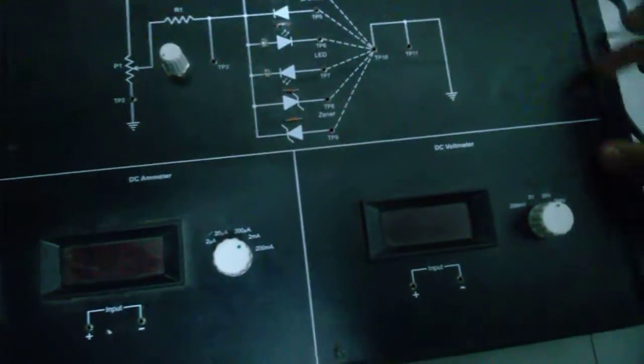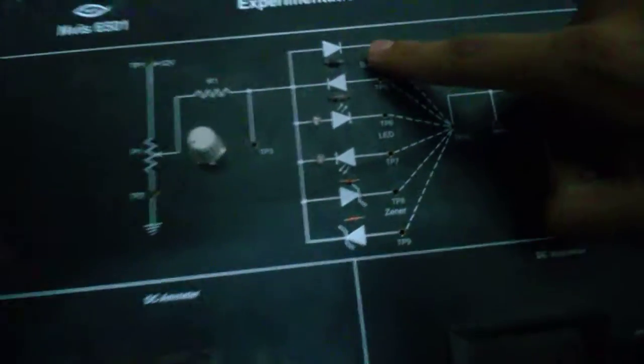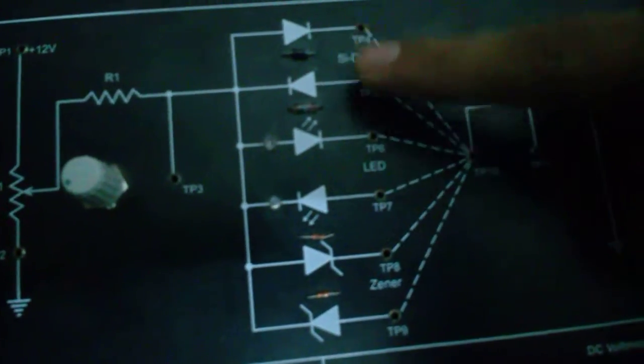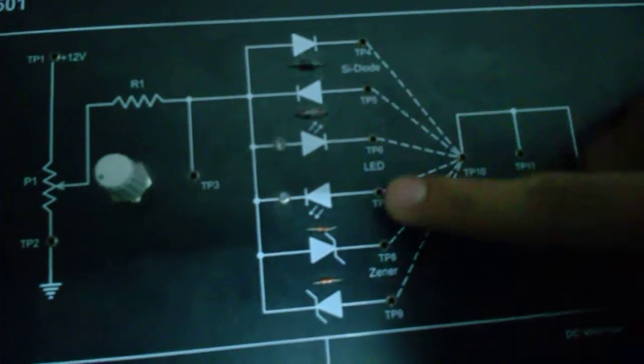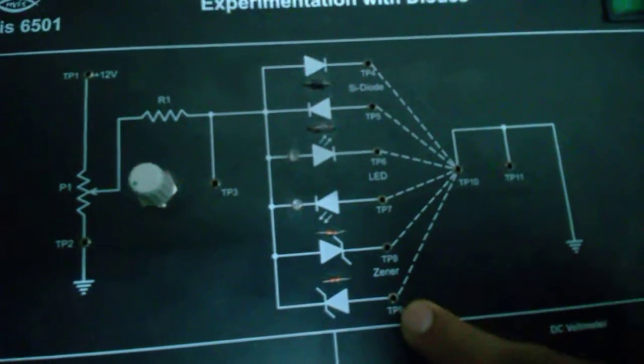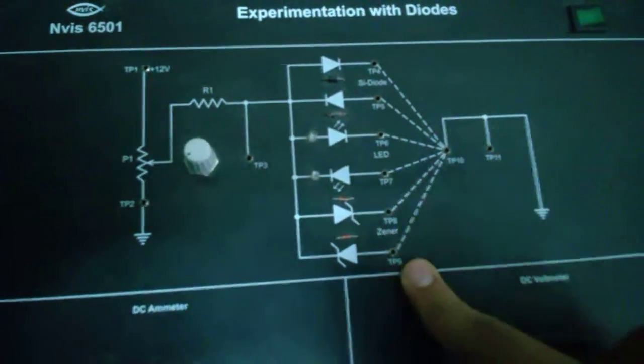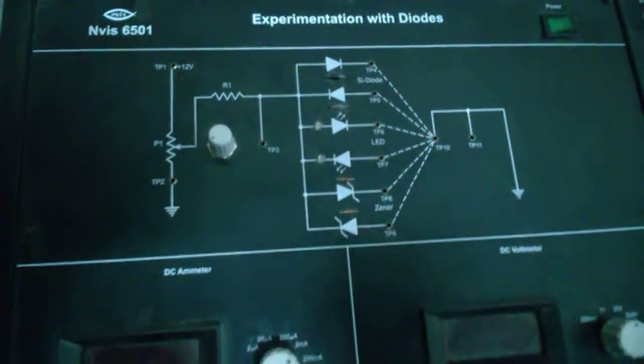Here we have a training board of diodes. It is PN junction forward bias diode, it is reverse bias diode, it is Zener forward bias, Zener reverse bias. Now we are going to calculate the voltage and current with the help of this ammeter and this voltmeter.